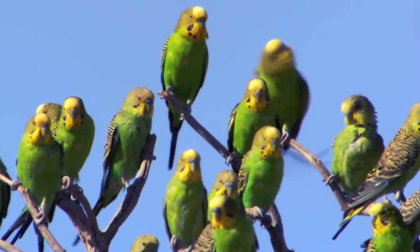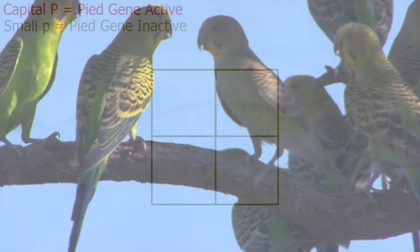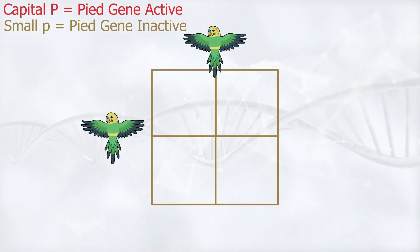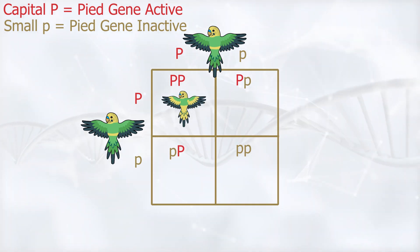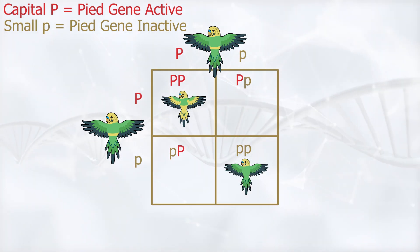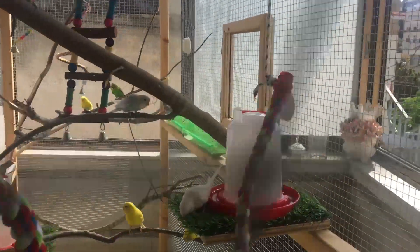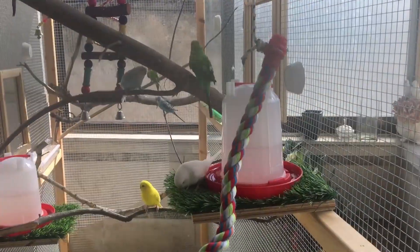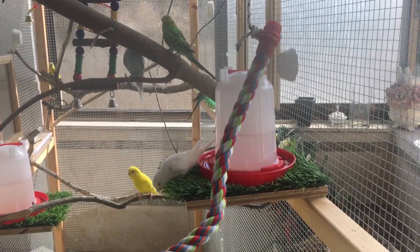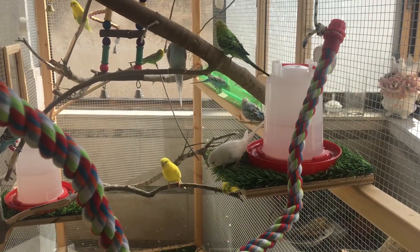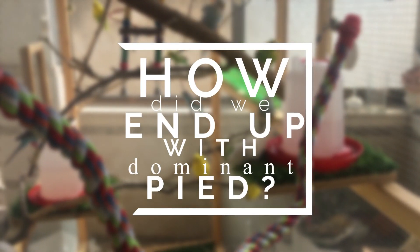Actually, the answer lies in this exact sentence. Since pied is a dominant gene, it's enough for only one budgie to be pied to start a chain of a whole lot of pied budgies in the wild. And since we know there aren't any pied budgies in the wild, we can rule out the possibility of having pied budgies in the first place. This might raise another question: how did we end up with pied budgies if there aren't any pied in the wild?